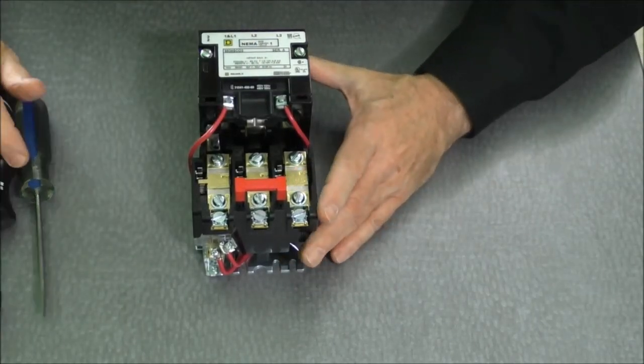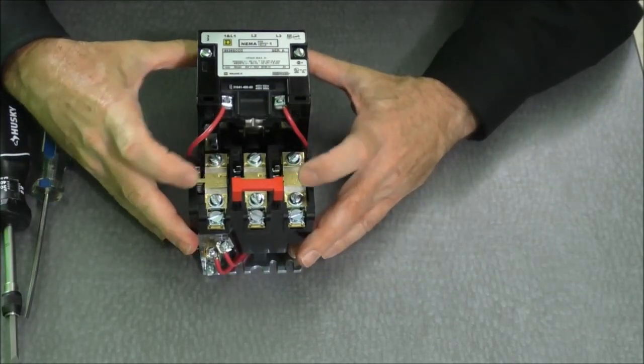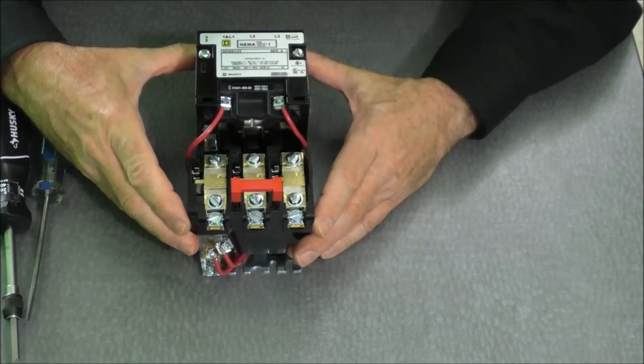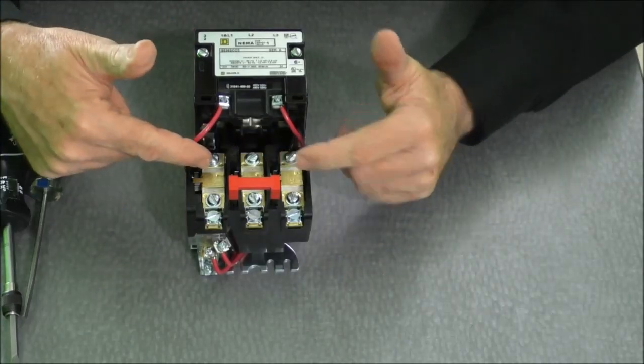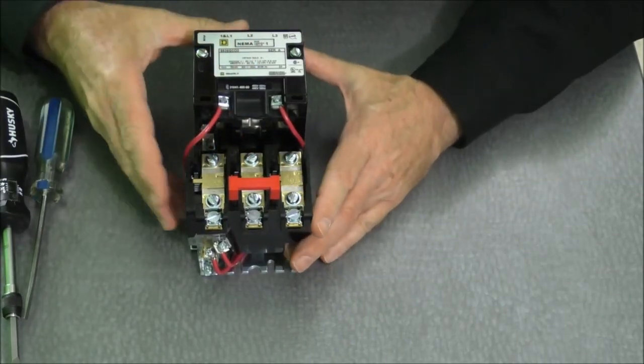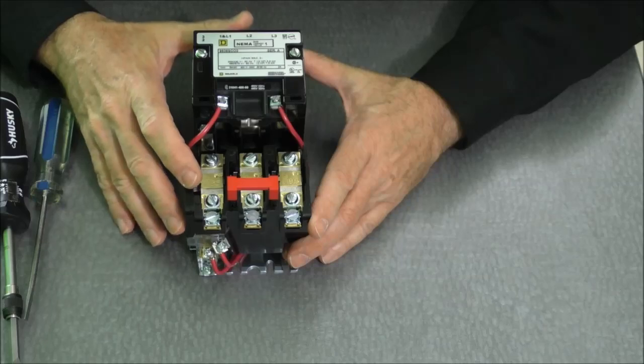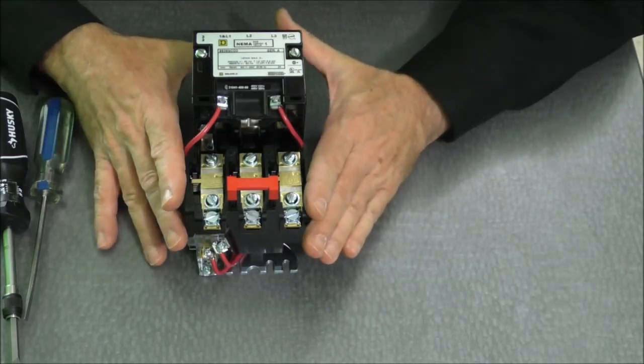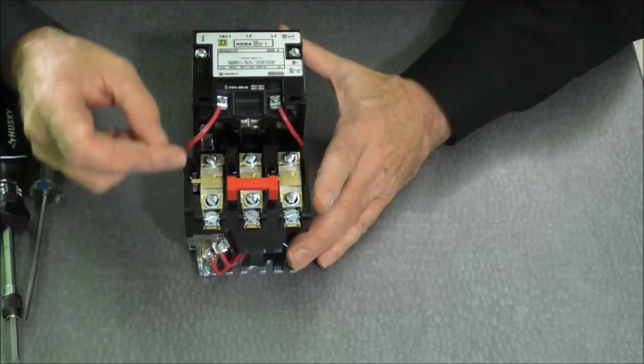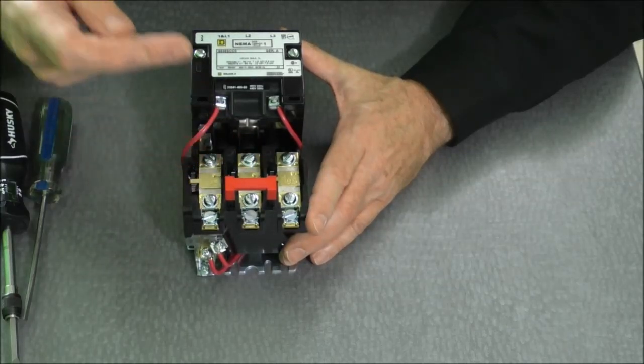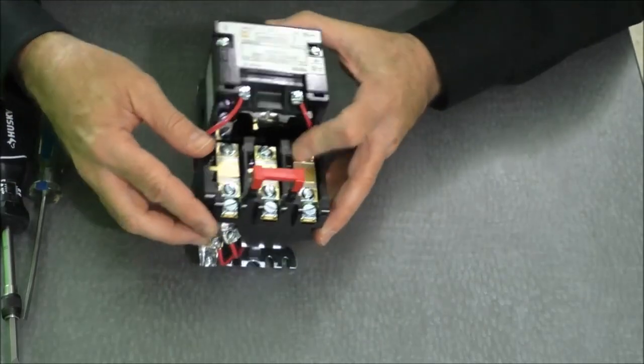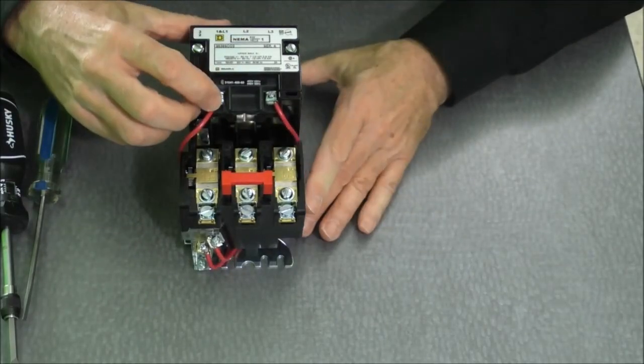Okay, so now we have the three thermal elements installed. The last thing we would want to do is reset the starter. All three pawl arms now are engaged into the star wheel of the thermal element. We're ready to run the motor. If we start the motor now and we would create an overcurrent, one of the star wheels would begin to turn. The pawl arm would come up and it would open the auxiliary contact, dropping the coil out.